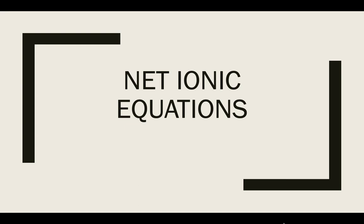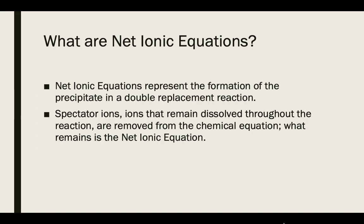Net ionic equations are a little bit different than chemical equations. A net ionic equation represents just the precipitate in the double replacement reaction. We represent the precipitate because only the precipitate is going through a chemical change. The rest of the chemical equation consists of spectator ions, which are removed from the equation because they remain dissolved the entire time and do not undergo a chemical change.